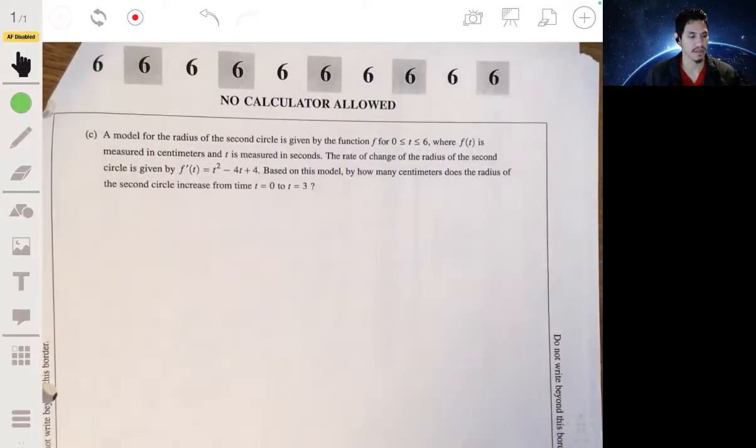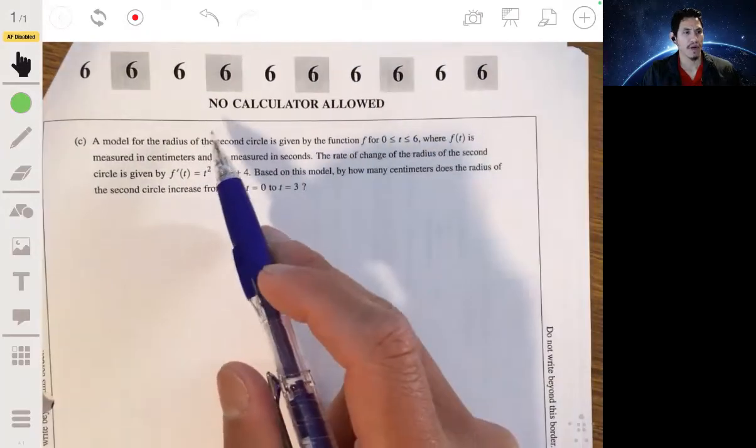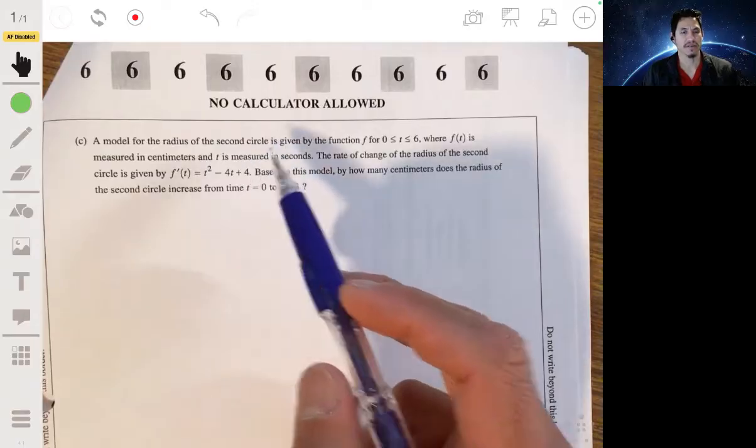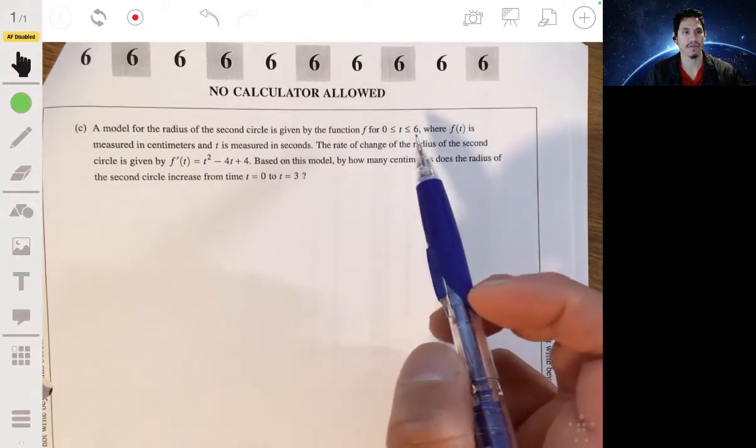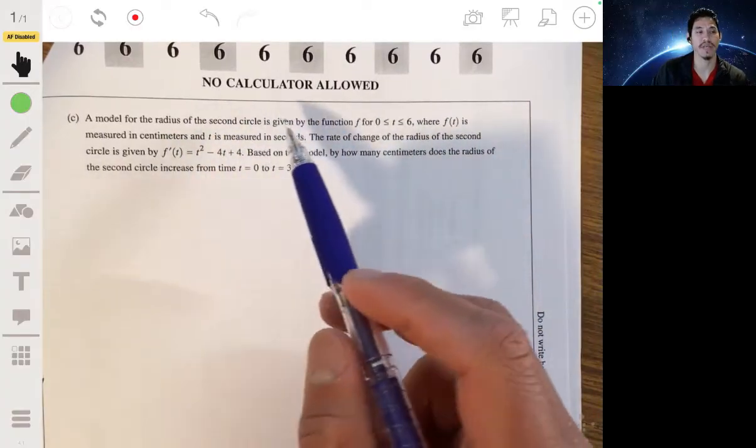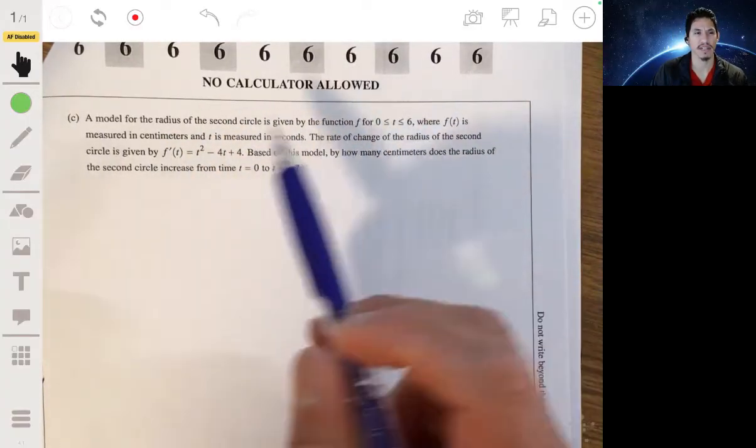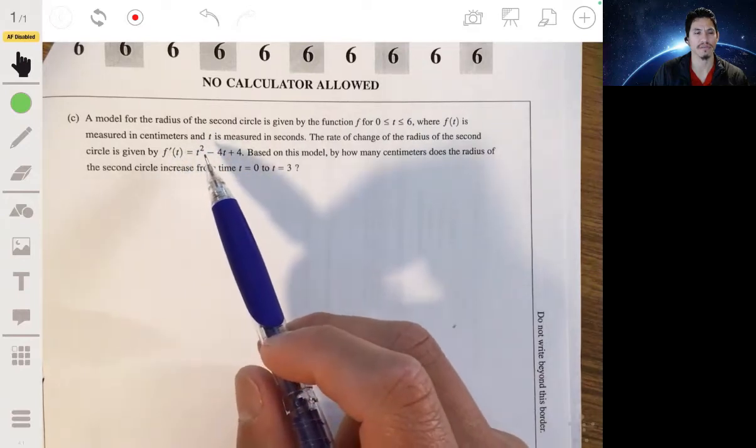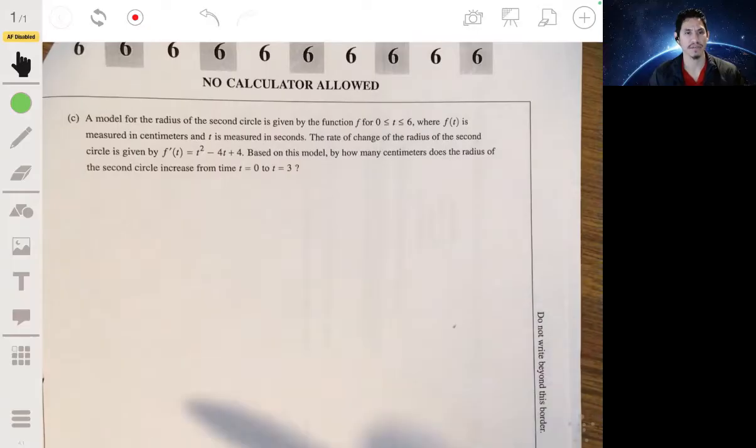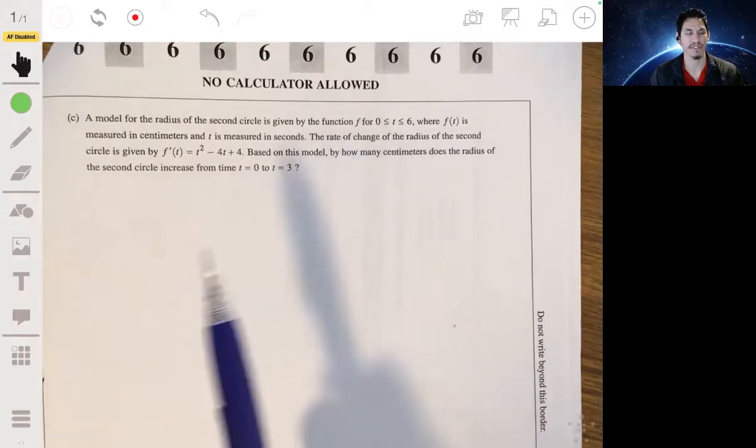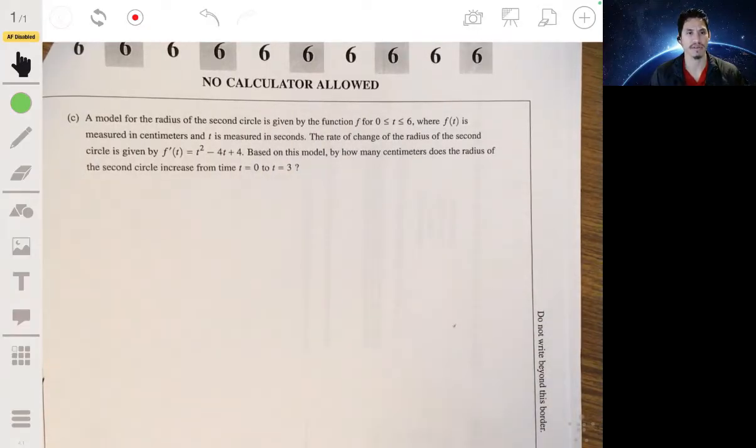All right. Final part. A model for the radius of the second circle is given by the function f for t between 0 and 6, where f(t) is measured in centimeters and t is measured in seconds. The rate of change of the radius of the second circle is given by f'(t), which is equal to t² - 4t + 4. Based on this model, how many centimeters does the radius of the second circle increase from time t equals 0 to t equals 3?